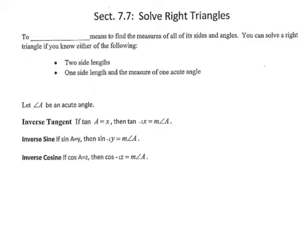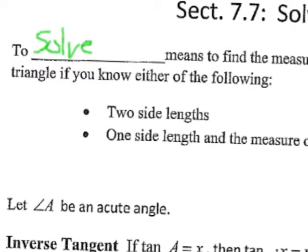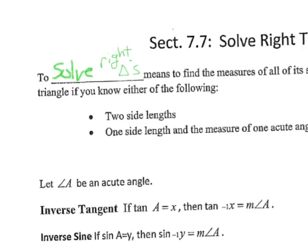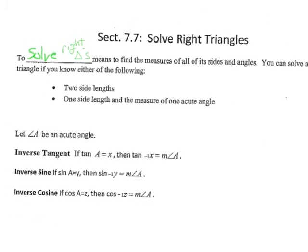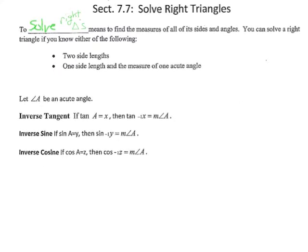Solving a right triangle means you find everything you can about it — all its sides and all its angles. This is kind of a bag of tricks: you've got the Pythagorean Theorem, sine, cosine, tangent, and now inverse tangent, inverse sine, and inverse cosine. We can do this.